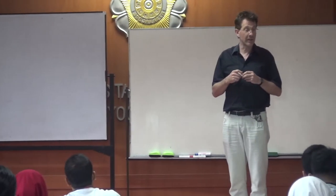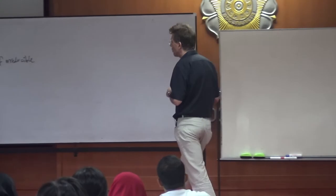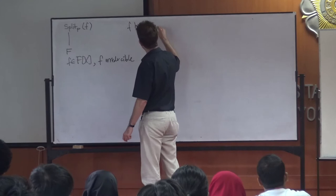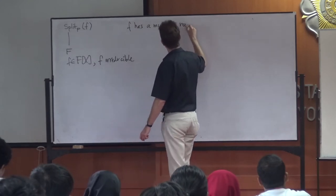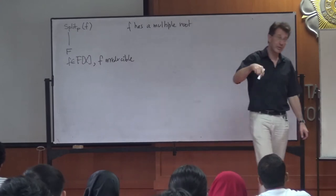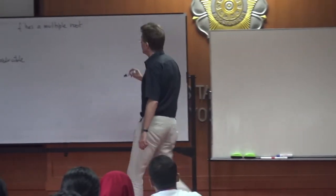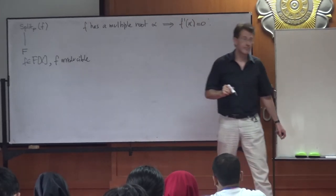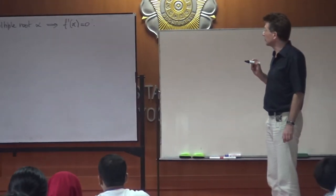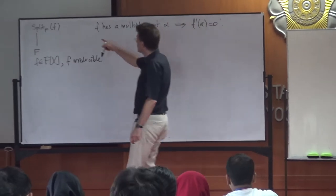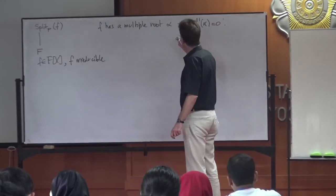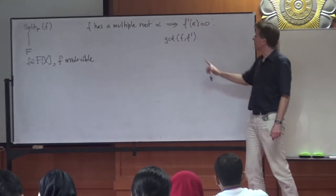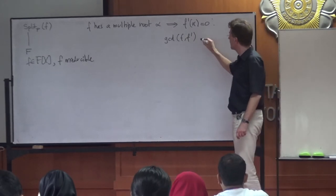In characteristic 0, that never happens. Why? Because if you learn that F has a multiple root in some extension, then the multiple root is also a root of the derivative. A multiple root alpha implies that the derivative evaluated at alpha is 0. And if your F is irreducible, the GCD of F and F prime is not co-prime — they have a common root, so the GCD is not 1.